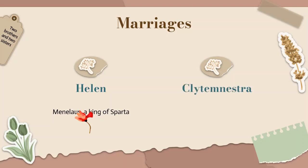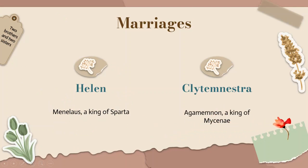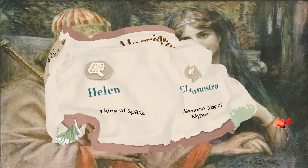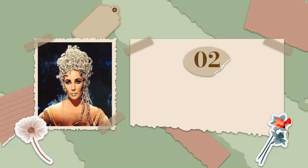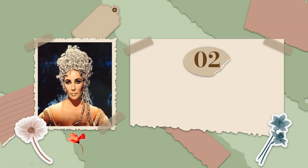Clytemnestra married Menelaus' brother Agamemnon, who was king of Mycenae. This painting shows Helen and King Menelaus. What was Helen's story, and how is she related to Leda and the Swan? In this picture, you see Elizabeth Taylor playing the role of Helen of Troy in a movie adaptation of Christopher Marlowe's Dr. Faustus. Interestingly, in that movie they consider Helen not as a normal human being — her hair is not natural, there are some shining, sparkling things about her.